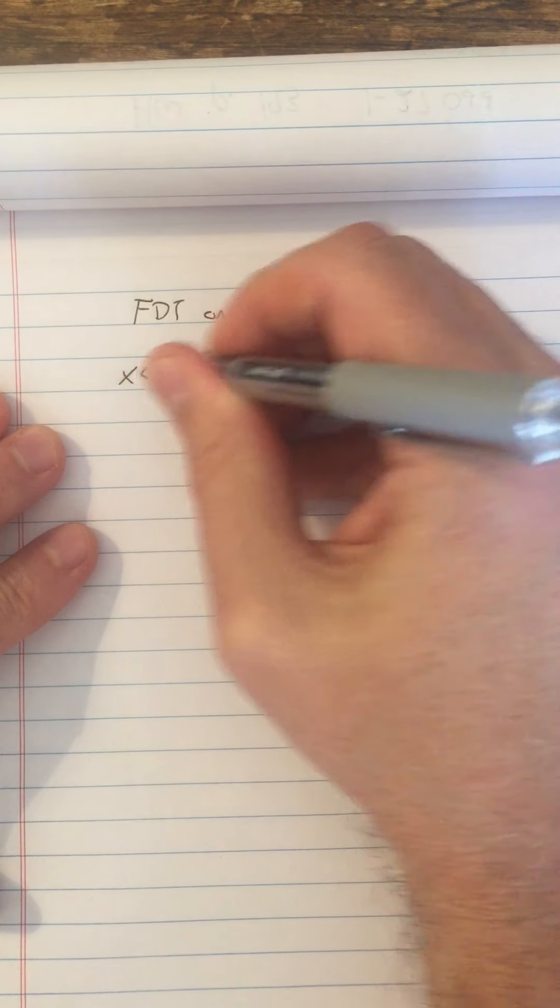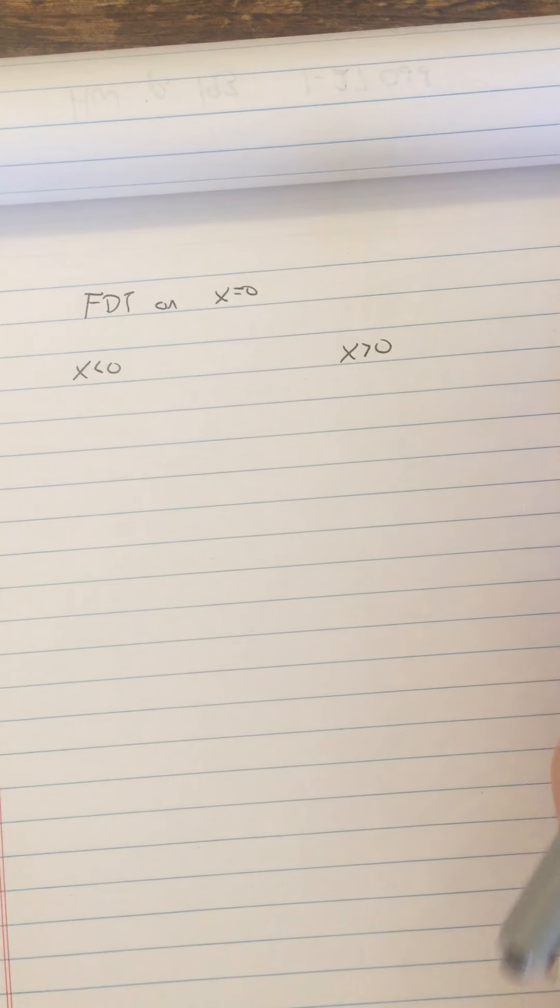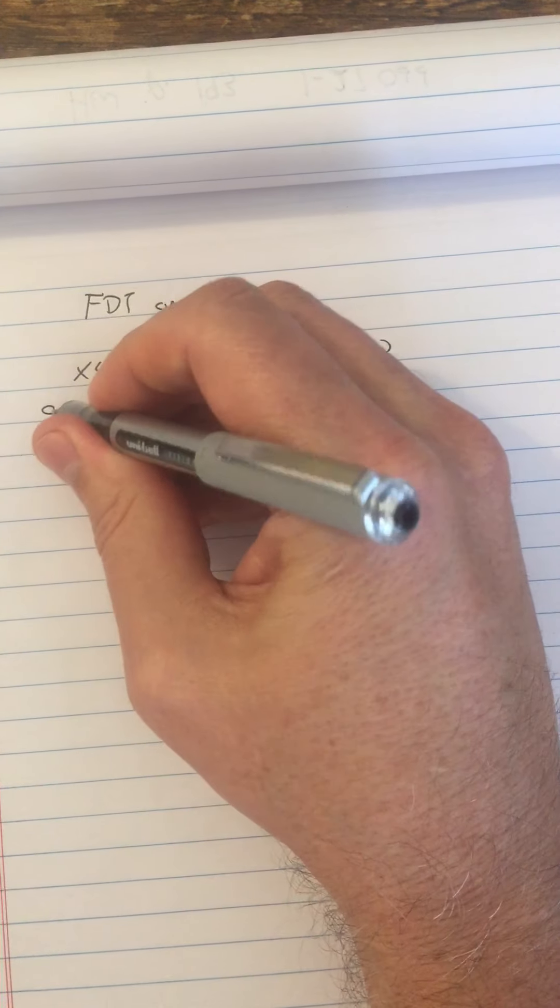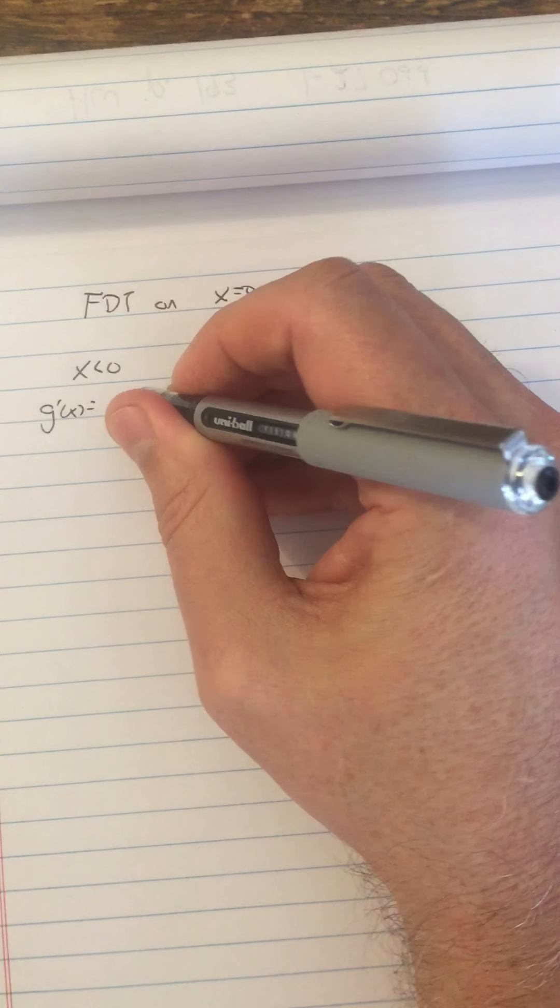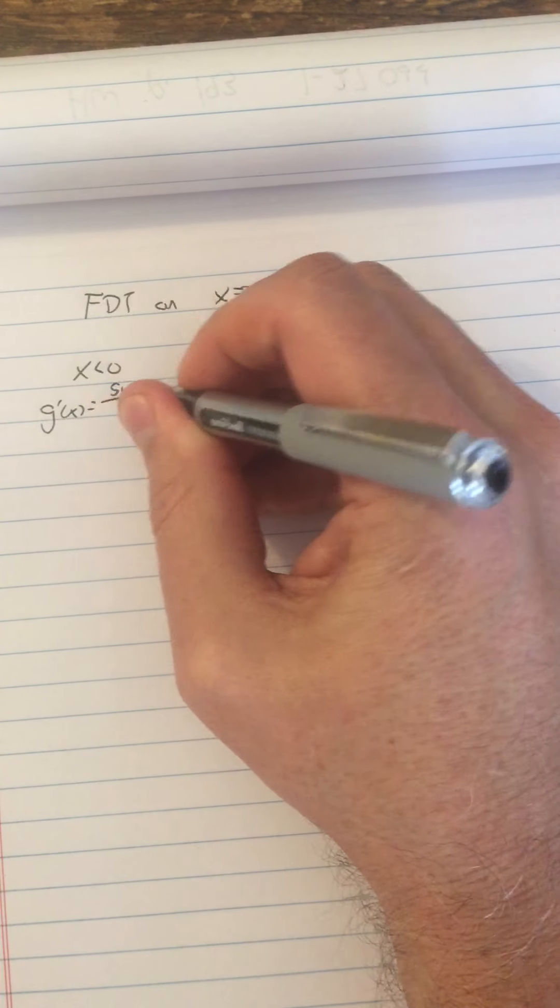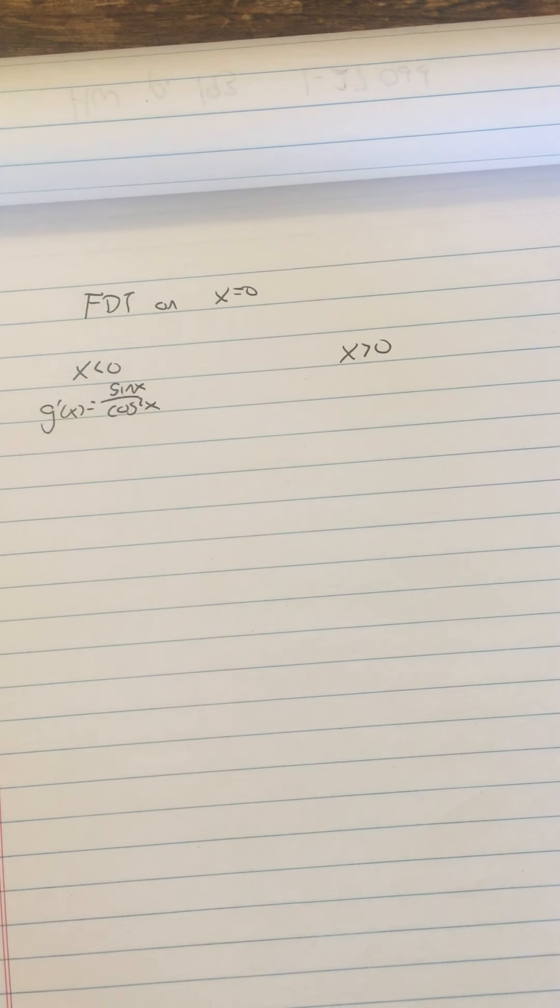We're going to do first derivative test on x equals zero. So we'll consider x less than zero and x greater than zero. Let's keep our G prime of x as being sine x over cosine squared x, because it'll make it easier to analyze the signs.